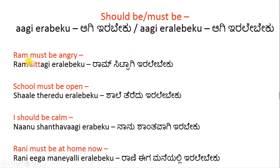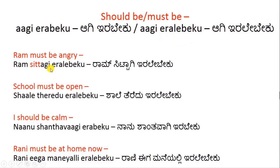Let us see a few examples. Ram must be angry. In Kannada: Ram sita-gi-Ira-Ley-Beku. Anger or angry is 'situ'. We delete the last U as usual, and we add 'Aagi'. Ram is the same name in Kannada. So: Ram situ Aagi-Ira-Beku, or Ram situ Aagi-Ira-Ley-Beku.